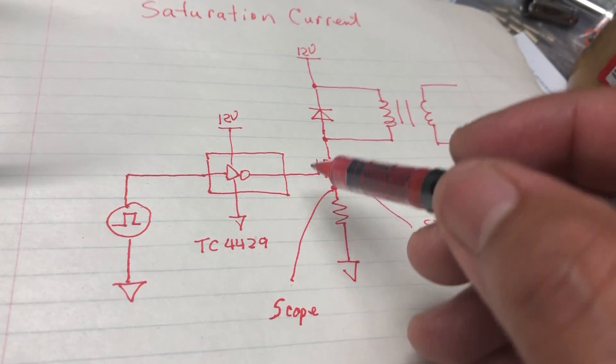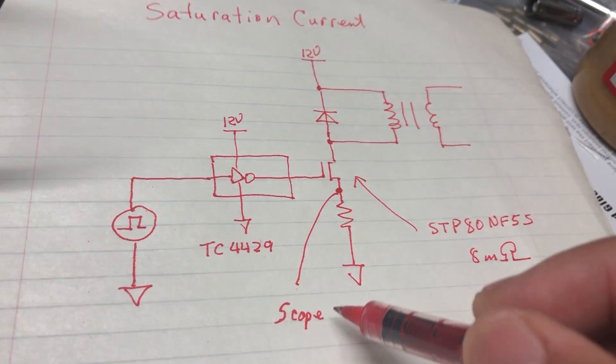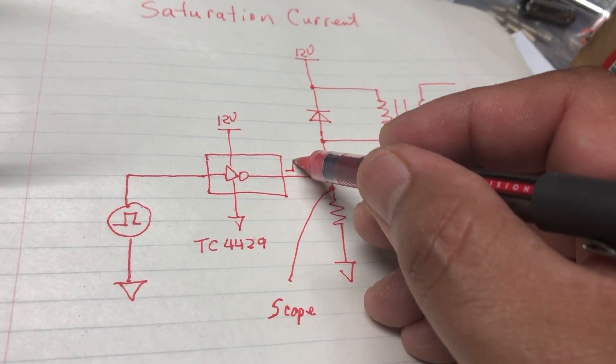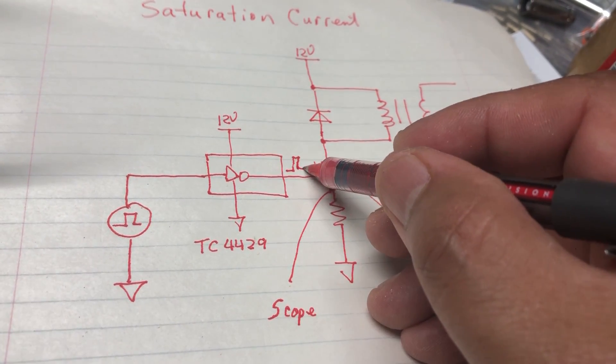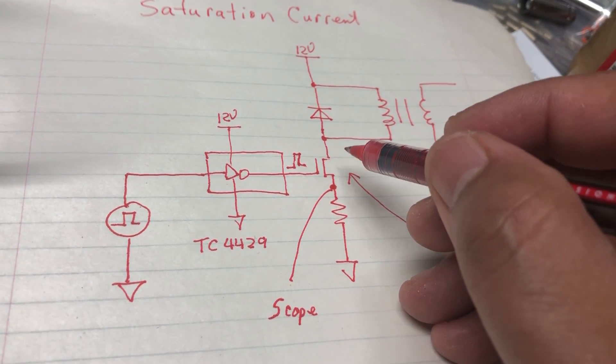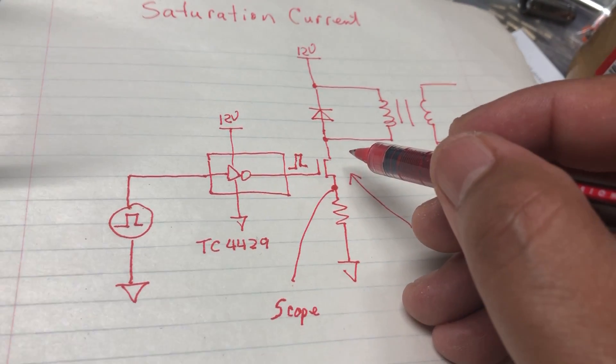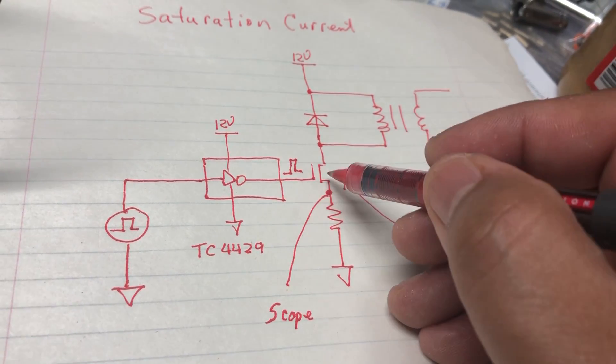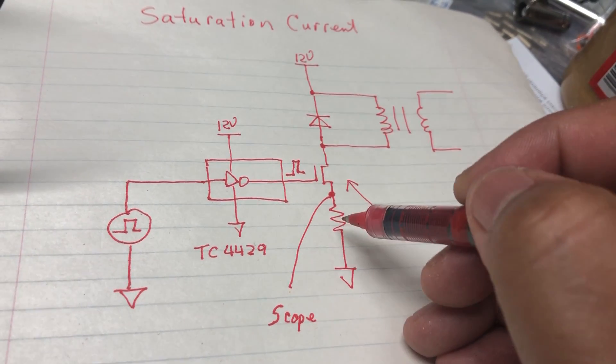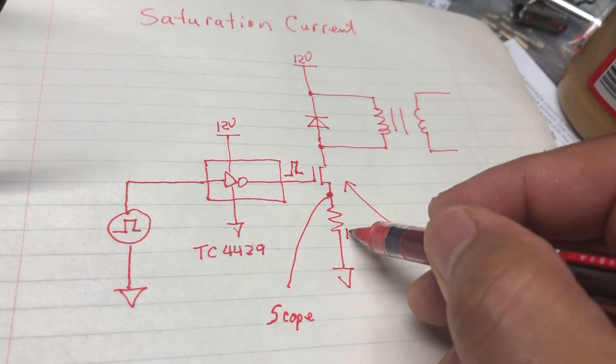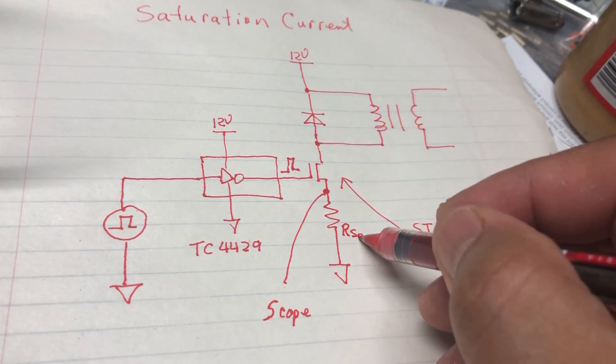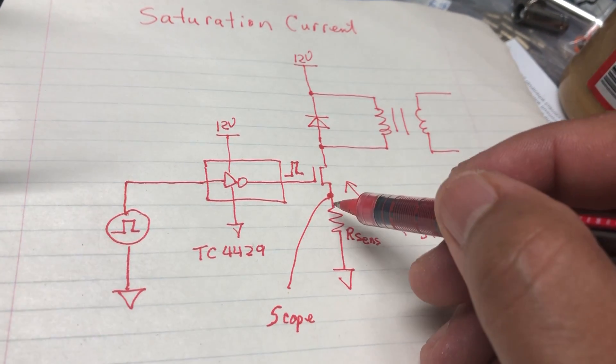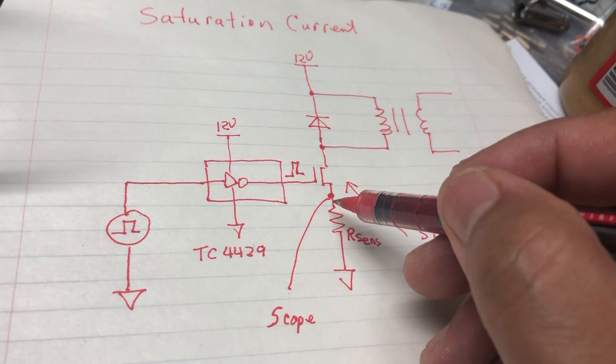Basically what you want to do is put a small pulse right here and you want to turn this MOSFET on for a very short time. When you put 12 volts here, this is grounded with this resistor - you can call this a sense resistor - and you scope it that way.